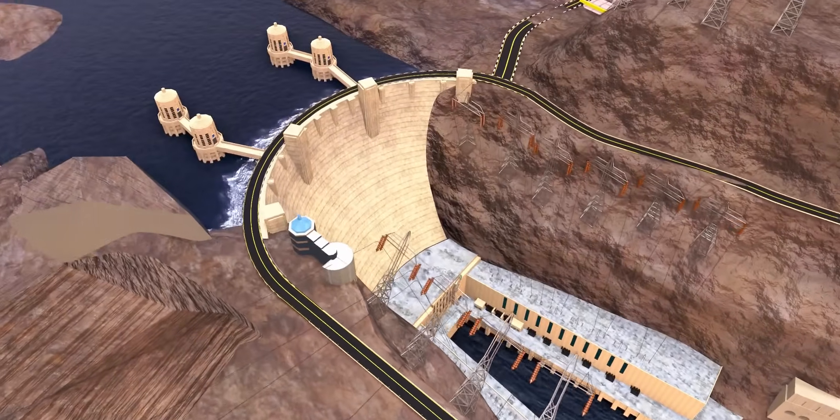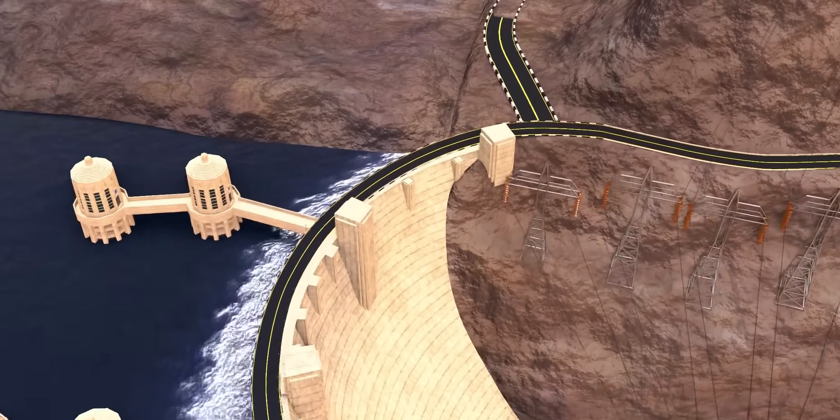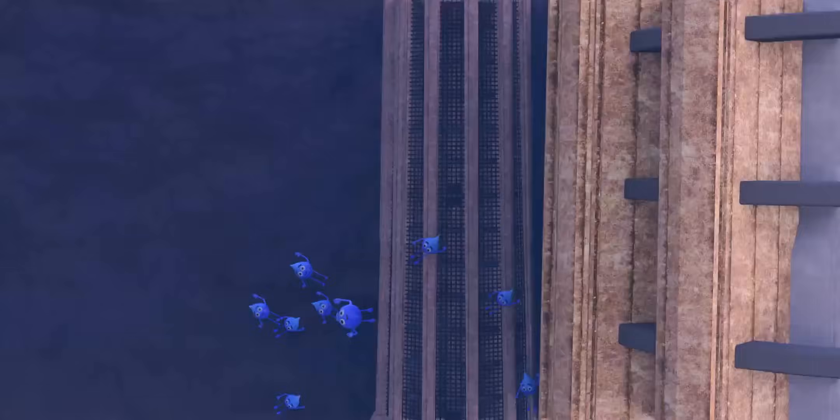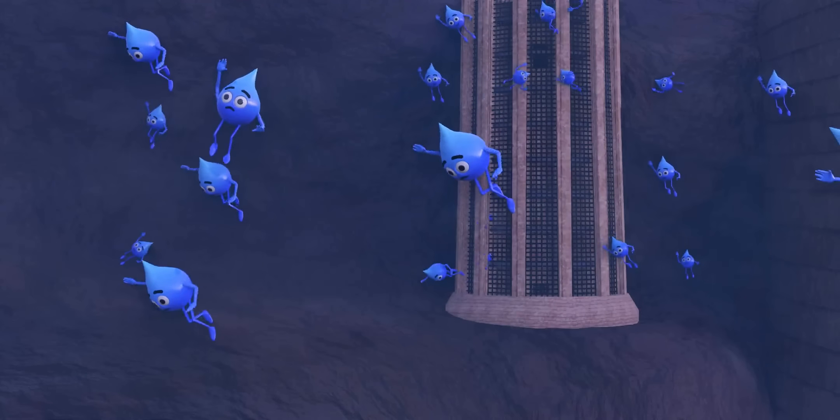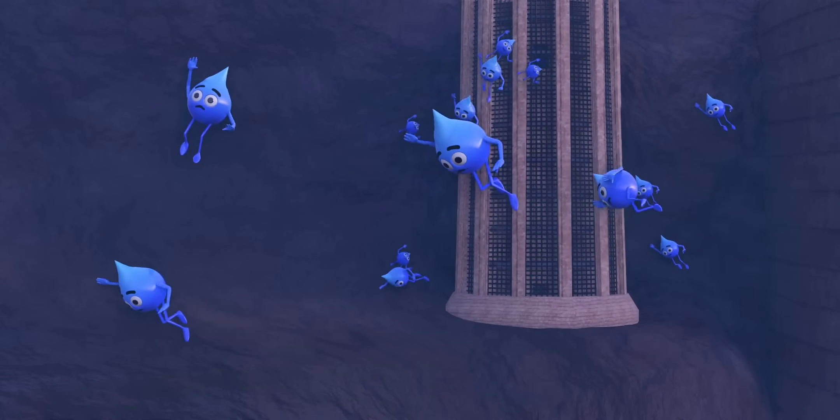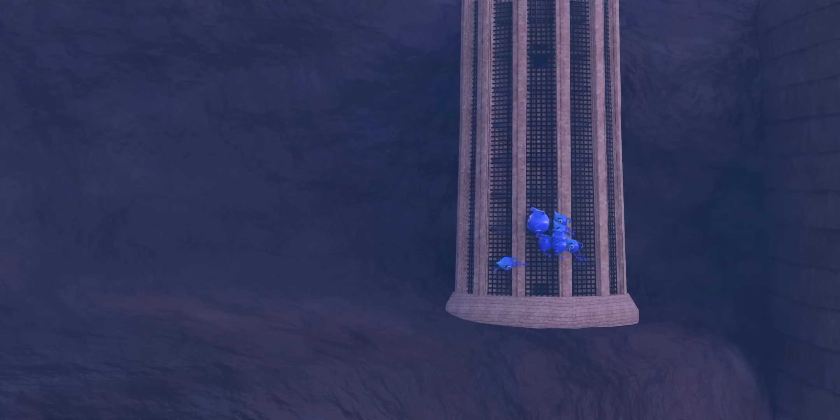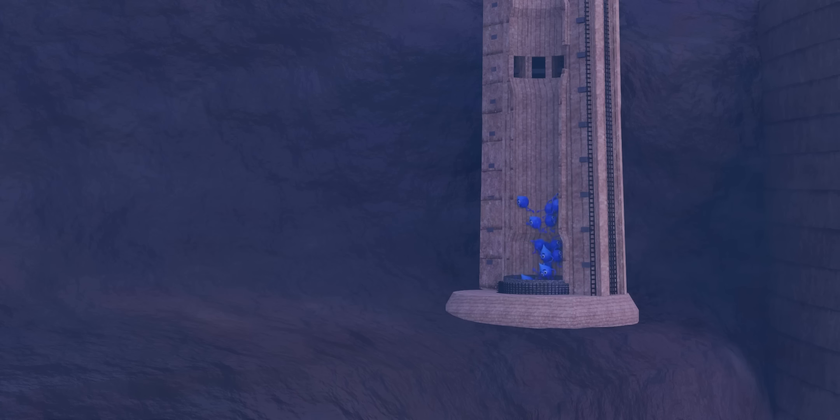You've understood a lot about Hoover Dam's power production capabilities. Let's have a journey along with a few water particles and revise all the stages in power production. The water particles enter the intake towers from different regions of the reservoir. As they come down, their velocity increases.